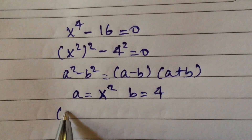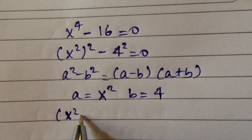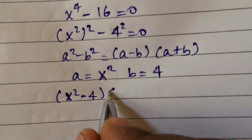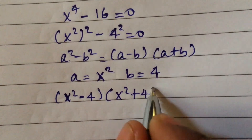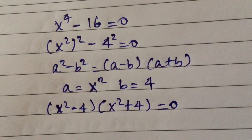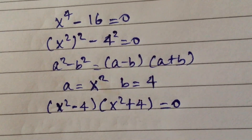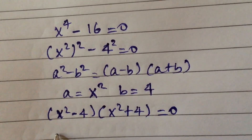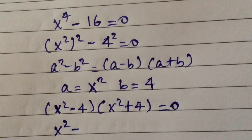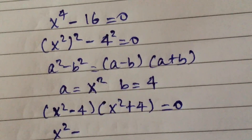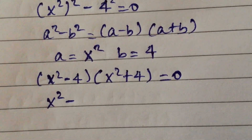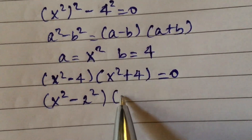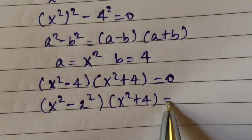Substituting into the formula, we get x squared minus 4, times x squared plus 4, equal to 0. Next, x squared minus 4 can be written as x squared minus 2 squared, times x squared plus 4, equal to 0.